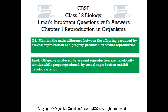Question number 4: Mention the main difference between the offspring produced by asexual reproduction and progeny produced by sexual reproduction. Answer number 4: Offspring produced by asexual reproduction are genetically similar, while progeny produced by sexual reproduction exhibit genetic variation.